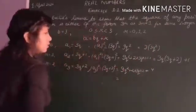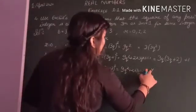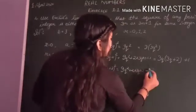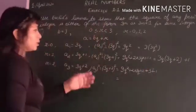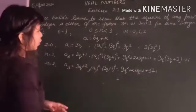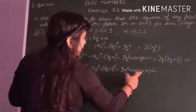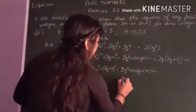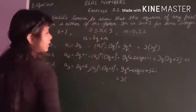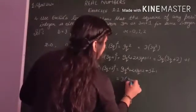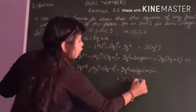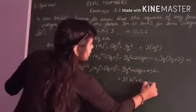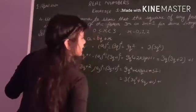Now see here also we will do the same thing, but before doing it, I am splitting this 4 as 3 plus 1. Now see again, we have 3 common. Taking 3 common, you will get 3q square plus 4q plus 1, and plus 1 as it is.